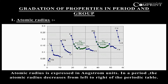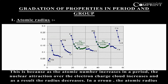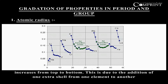In a period, the atomic radius decreases from left to right of the periodic table. This is because as the atomic number increases in a period, the nuclear attraction over the electron charge cloud increases, and as a result the radius decreases. In a group, the atomic radius increases from top to bottom, due to the addition of one extra shell from one element to another.